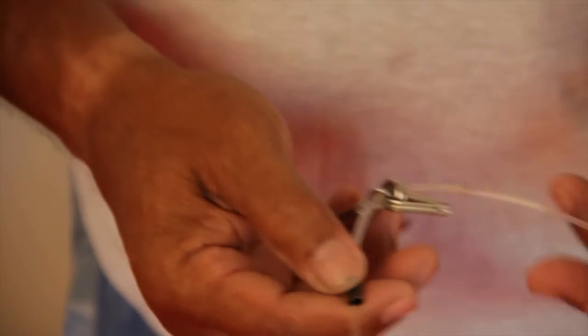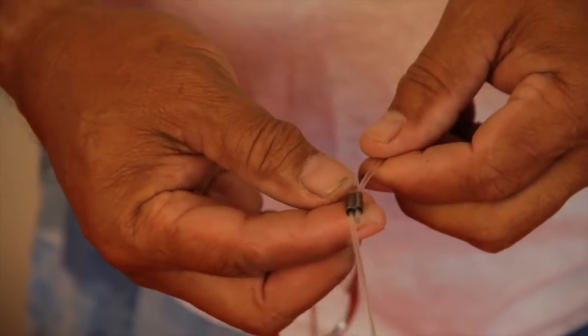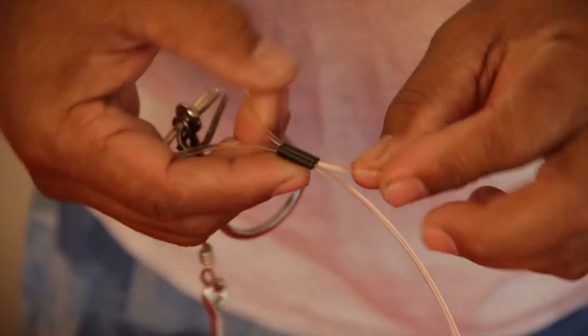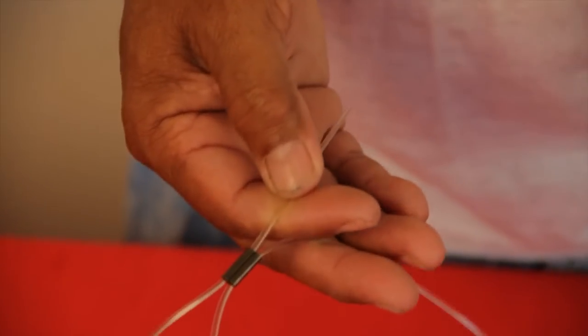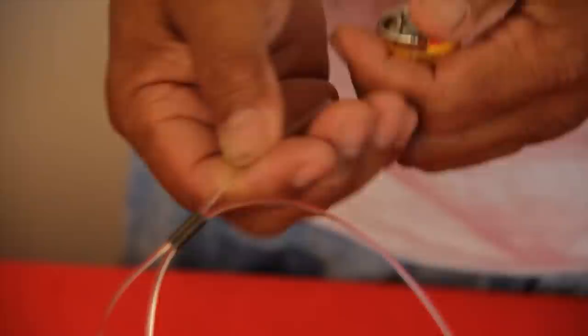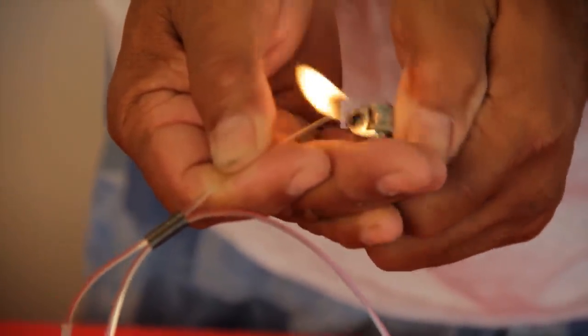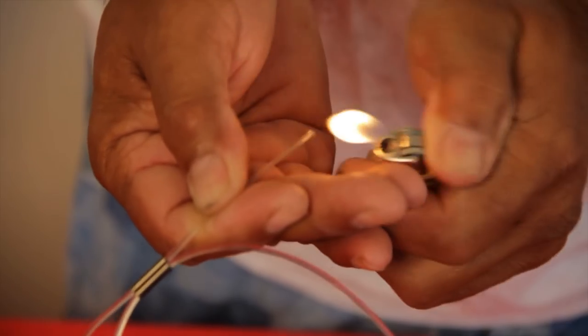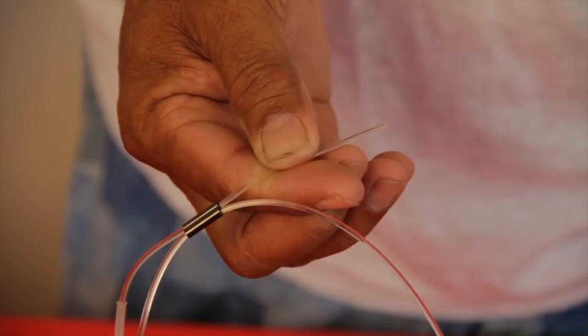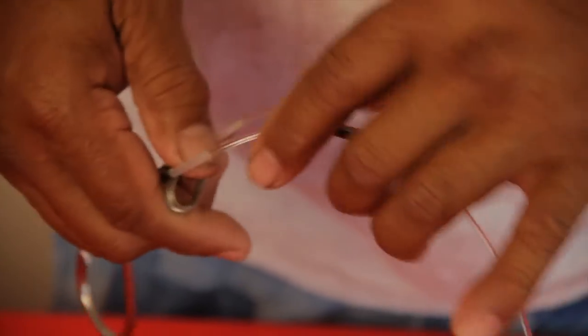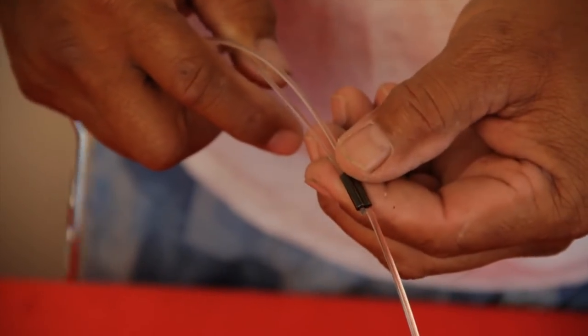And then what I do is, I thread the other end through the sleeve. Then what I do is, I get the lighter. And I burn the end. Just kind of make them so it's a flat, blunt end. So in case she tries to slide through, she's going to get stuck right there.